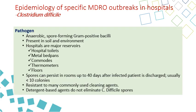C. difficile is an anaerobic, spore-forming gram-negative bacillus present in soil and the environment, and found on surfaces in the hospital, particularly in contaminated areas. High-touch areas especially affected include hospital toilets, metal bed pans, commodes, thermometers, and floors.